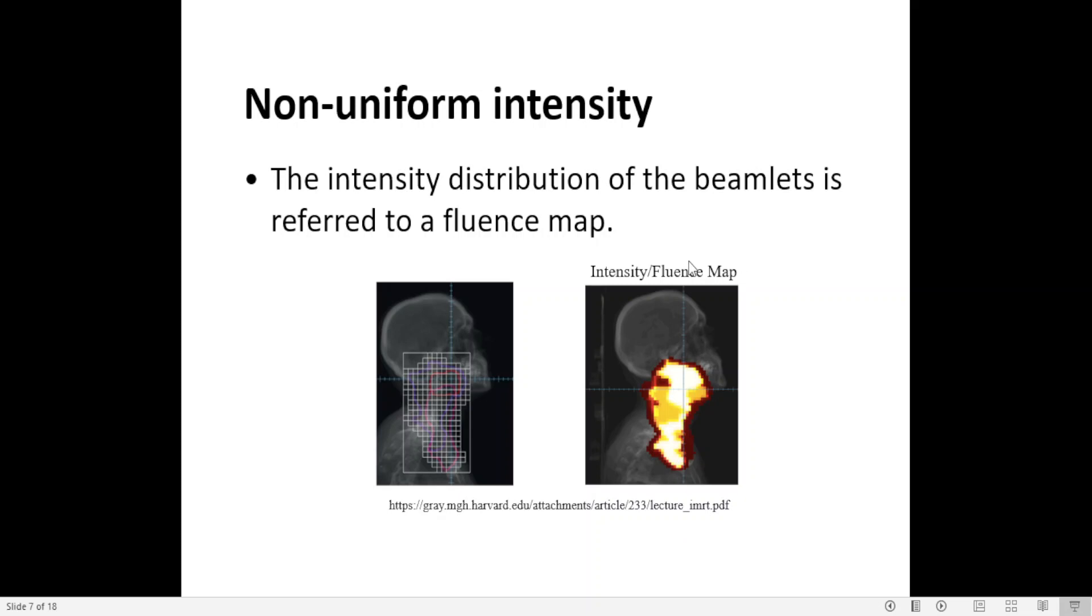Once the optimizer is done, if you go field by field on your IMRT plan, you're going to see the fluence map there for each field. The difference in color and color tone, darker, lighter, refers to the intensity level assigned to each beamlet.